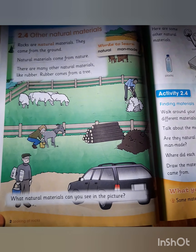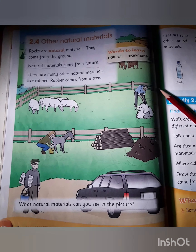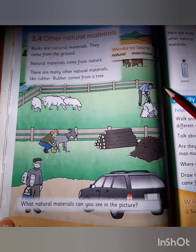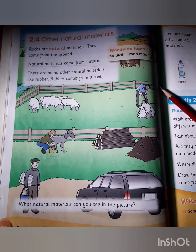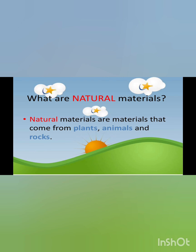These are all the natural materials on your science learner's book — you will circle them. Now let me show you a slideshow that will further explain the topic. Here you can see kids observing nature — they are looking at the leaves, observing natural materials. Natural materials are materials that come from plants, animals, and rocks.